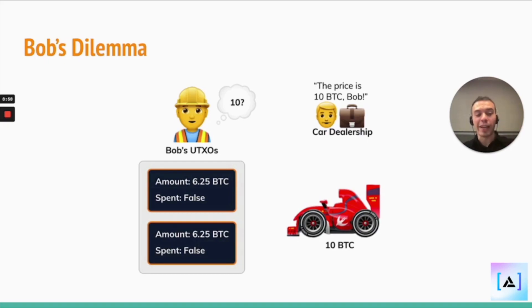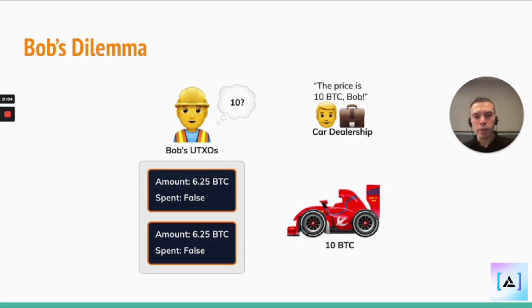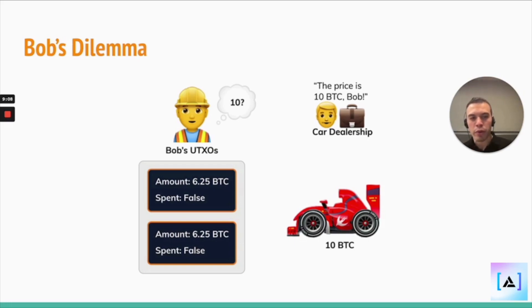But Bob, given he mined two Bitcoin blocks, he has 12.5. So Bob is looking at his UTXOs and saying: wait a second, I have two UTXOs worth 6.25 Bitcoin, but this guy's asking me for 10 Bitcoin for the car.